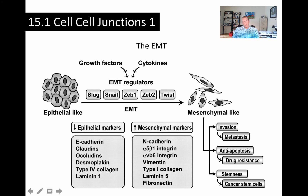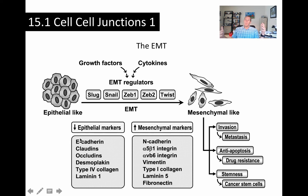This epithelial-to-mesenchymal transition is important in development, but it's also a process which is perturbed during metastasis — when cancer cells break away from their primary tumor, spread locally, and invade other tissues. The way they do it is they start expressing Slug, Snail, Zebs, and Twist, changing their cell surface adhesion proteins from e-cadherins to N-cadherins. E-cadherins hold epithelial cells together, while N-cadherins allow mesenchymal cells to contact one another and crawl. So going from epithelial markers to markers of a crawling cell type explains how a tumor starts spreading. One of the neat things about cancer biology is that if you understand this in development, you understand it being perturbed during tumorigenesis.